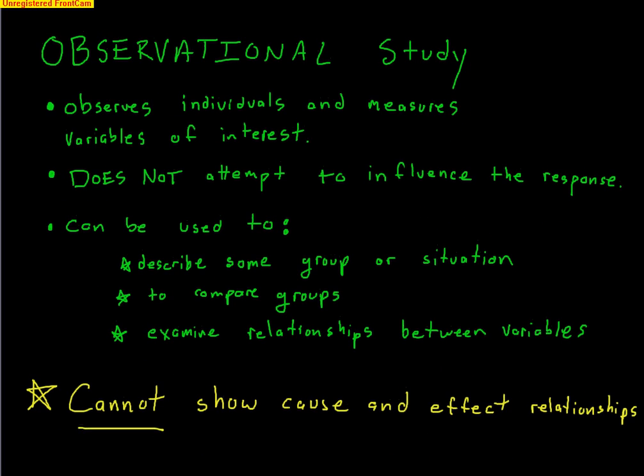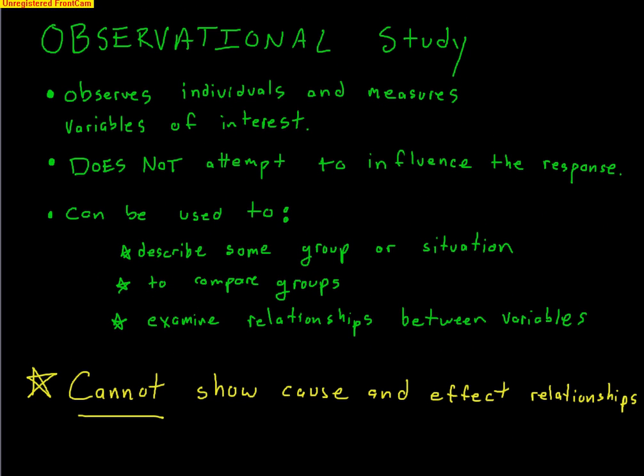The first way to answer a research question is with an observational study. In an observational study, the researcher has the research question, and then he or she simply observes individuals and measures variables of interest. We do not attempt to influence the response at all. Researchers make no attempt to influence the response — all they do is observe. Observational studies can be used to describe some group or situation, compare groups, and examine relationships between variables.